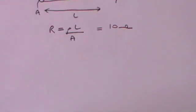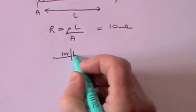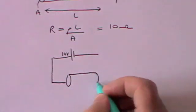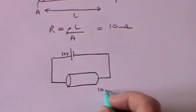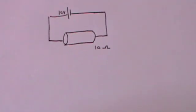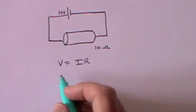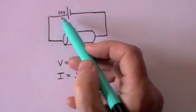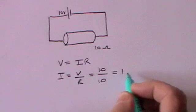Now we're going to put that in a circuit. Here is a 10 volt battery in a circuit with the piece of conducting material — a 10 ohm resistor. I want to know what is the current flowing through that circuit. We just take Ohm's law: V equals IR, which means I is V over R, equal to 10 volts divided by 10 ohms, giving us 1 amp.